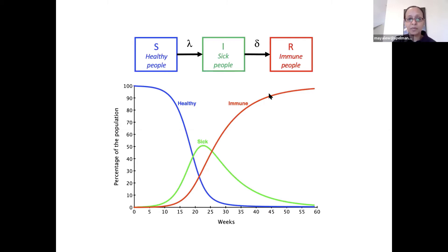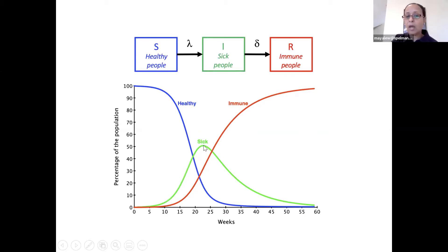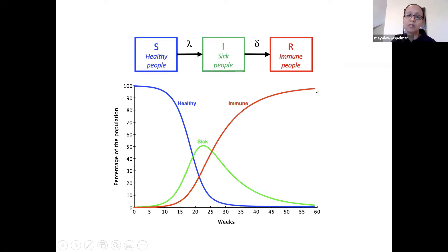Here is a representation of susceptible people. At the beginning of the pandemic, 100% of the population is healthy. Once you have one infected person, as healthy people become infected, their proportion in the population declines and can go technically all the way to zero. The number of sick people increases over time up to a point — usually when 50% of the healthy people have been infected — and then it starts to wind down. Gradually, the number of recovered people starts to go up.